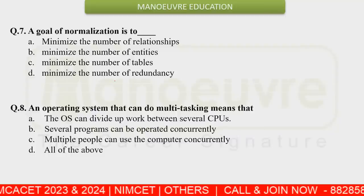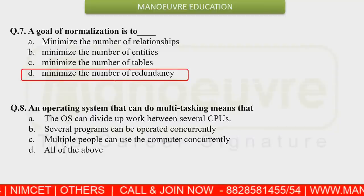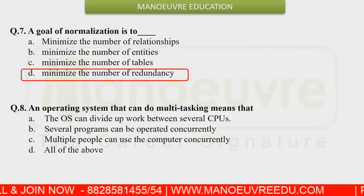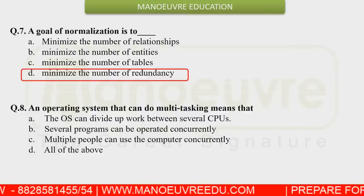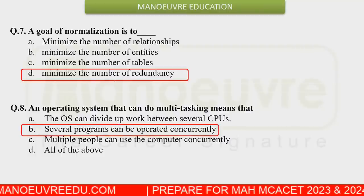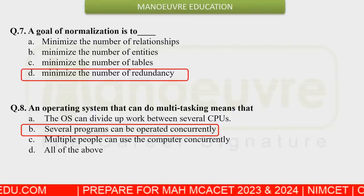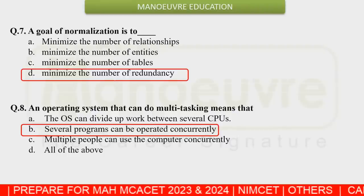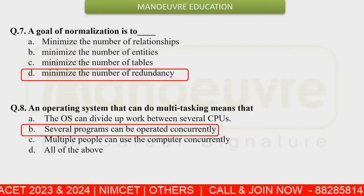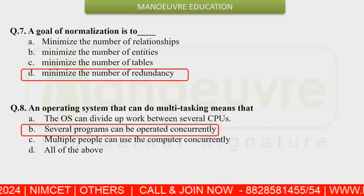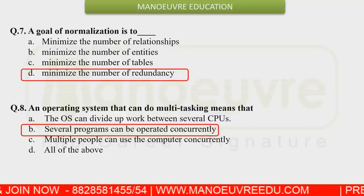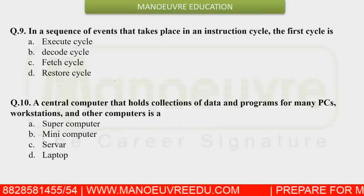The goal of normalization is to reduce and minimize the redundancy factor in a database. There was also a question about an operating system that can do multitasking — multitasking is where several programs operate concurrently, meaning multiple programs are running at the same time.